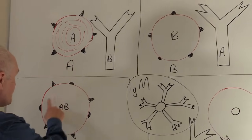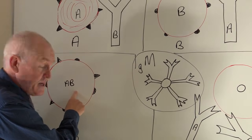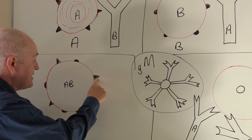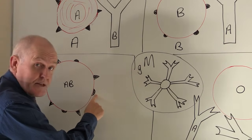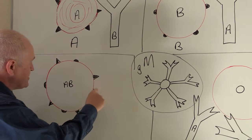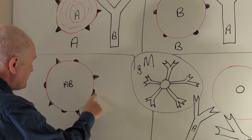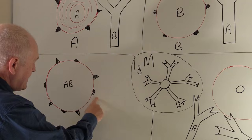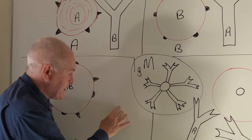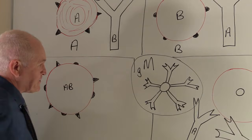If someone's blood group AB, they are blood group AB because the red cells have both the A and the B antigens. This is the way we've drawn an A antigen and this is the way we've drawn a B antigen. And as you can see, there are no antibodies in the blood if someone is AB.